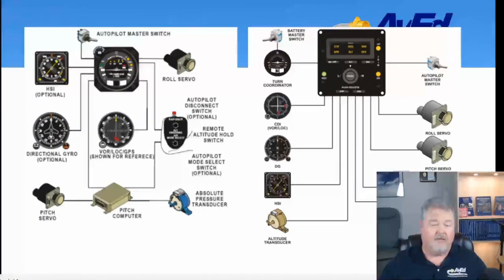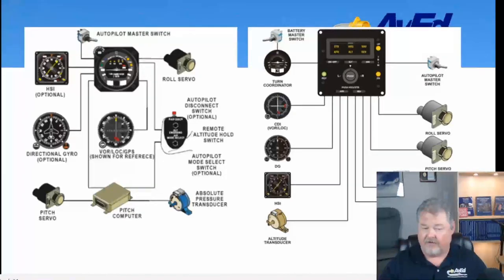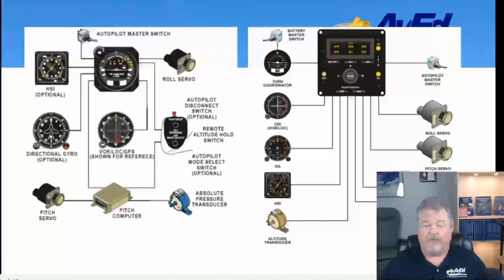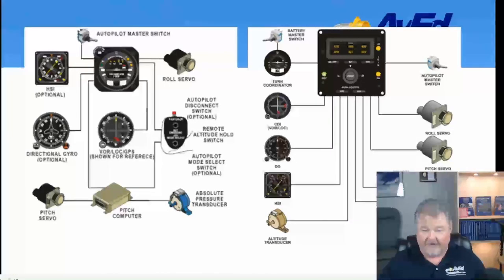Looking at the right-hand side toward the bottom, this also has the same optional remote disconnect for the yoke and a remote altitude engage button. Both of them have the same features. The big difference is that the pitch computer drives the pitch servo on the 20s and 30s, while the power for the pitch servo comes from the main controller itself on the 40s and 50s.